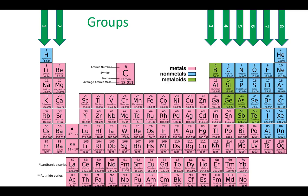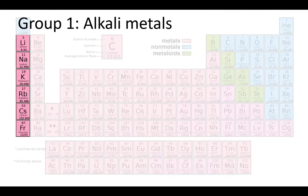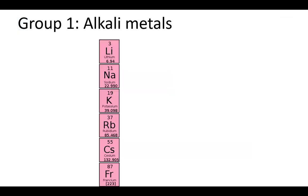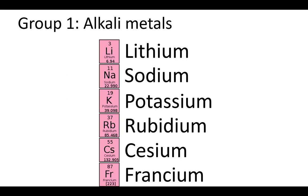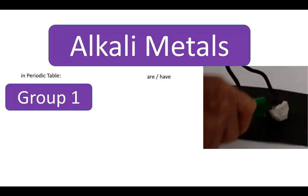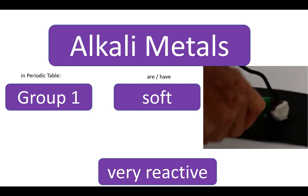Now some of these groups have special names. The first group, minus hydrogen, is called the alkali metals: lithium (Li), sodium (Na) from the Latin natrium, potassium (K) also from the Latin kalium, rubidium, cesium, francium. The alkali metals are soft and light grey in color.